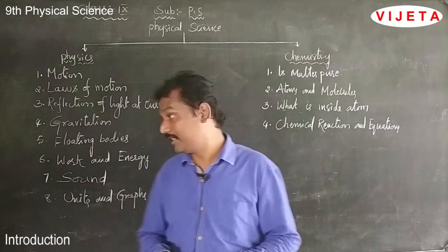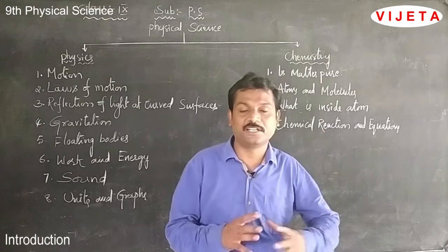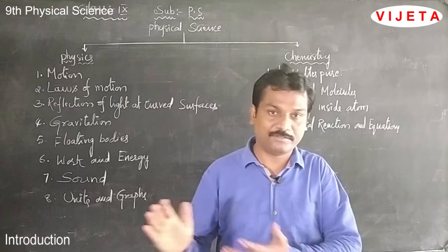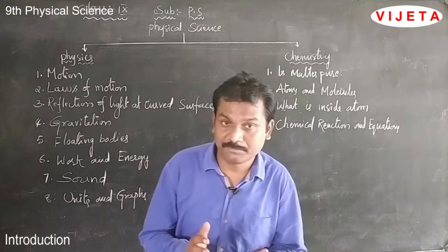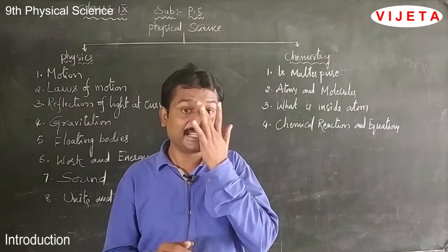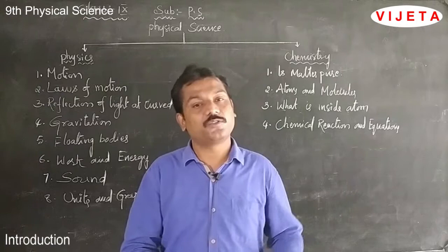Coming to the last chapter of physics, units and graphs. Physical quantities are classified into two categories: fundamental quantities and derived quantities. Fundamental quantities are those which do not depend on other quantities. Derived quantities are those which depend on other quantities. We will discuss fundamental and derived quantities and how to measure them, and their units.